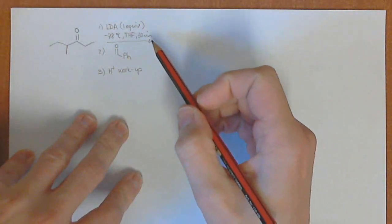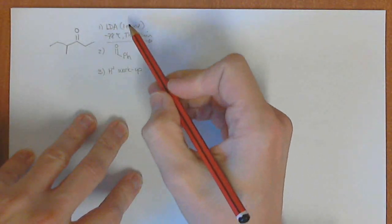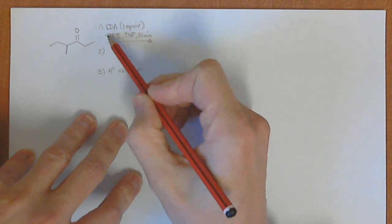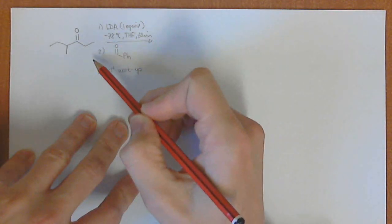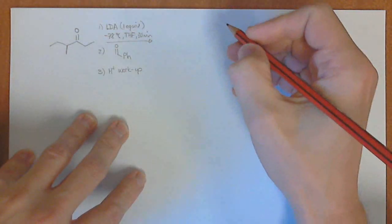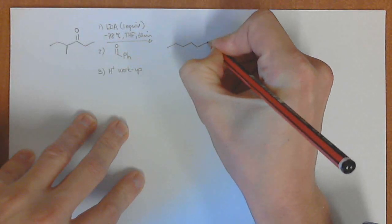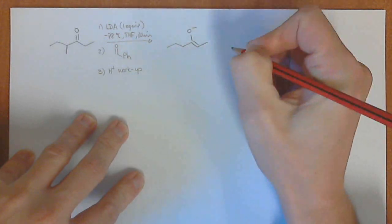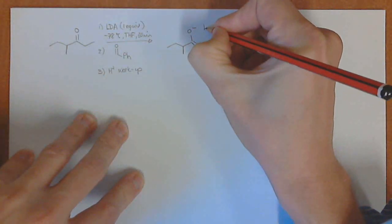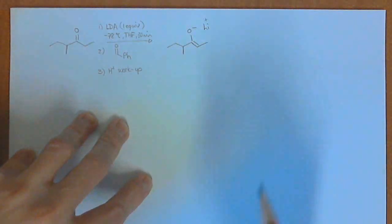But just have a look at this specific reaction over here. We've got this unsymmetrical ketone, we've got a nice, very strong, sterically hindered base, one equivalent of that, at low temperatures, THF, 30 minutes, we are able to form the enolate, specifically the kinetic enolate. And I'm missing a methyl group there, and it is actually the lithium enolate that is being formed, the counter ion is there.